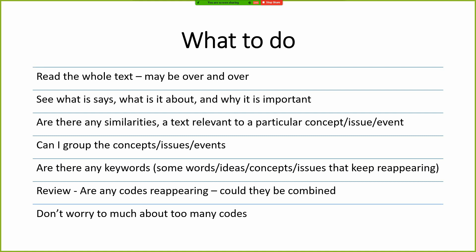For example, system, procedures, rules, and policies — initially you give four codes, but later you identify that these four things are essentially the same. System, procedures, rules, and policies could all be 'rules and regulation' — one code. These four codes combined into one.